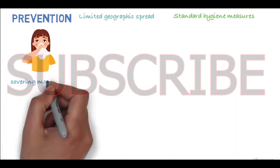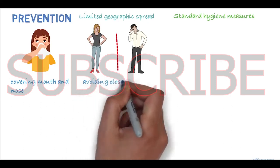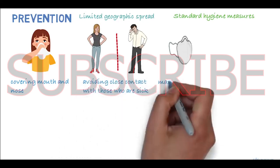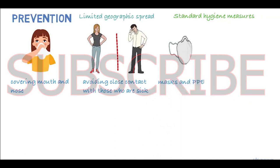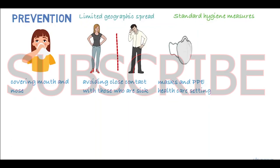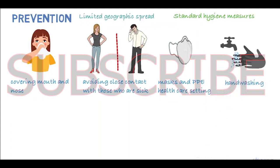These include covering your mouth and nose when coughing or sneezing with a medical mask, tissue, or flexed elbow; avoiding close contact with those who are unwell; the appropriate use of masks and personal protective equipment, especially in a healthcare setting; and washing hands regularly with soap and water or alcohol-based hand rub.